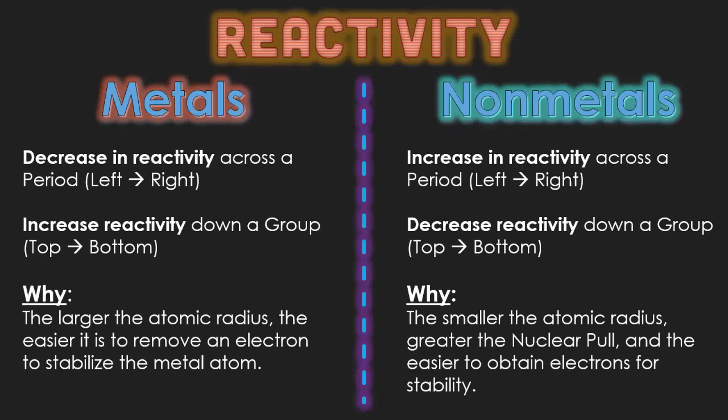What we know so far from the earlier videos is that metals will decrease in reactivity as you go from left to right in a period. However, they will become more reactive as you go down a group from top to bottom. The reason why is the larger the atomic radius, the easier it is to remove an electron to stabilize the metal atom.